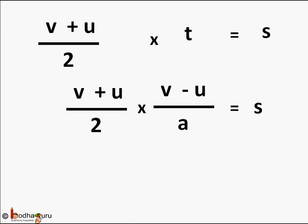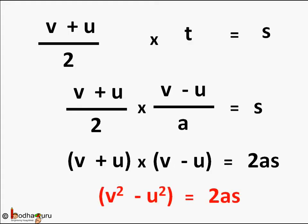2 and a on the denominator goes to the other side. So it becomes v plus u into v minus u is equal to 2 a s. From algebra we know x plus y into x minus y equal to x square minus y square. So it becomes v square minus u square equal to 2 a s. This is another formula we can use if time taken is not given.